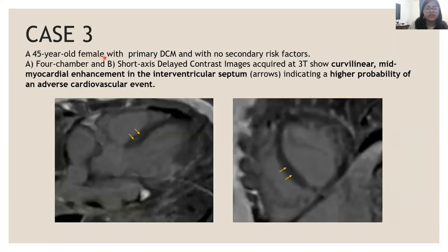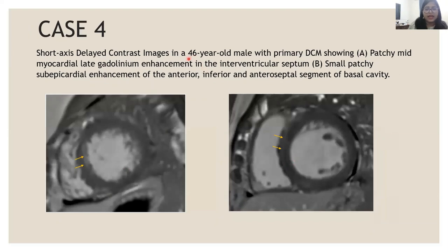A 45-year-old female diagnosed with primary dilated cardiomyopathy and no secondary risk factors — post-contrast images show patchy mid-myocardial enhancement in the interventricular septum. Additionally, a 46-year-old male with primary dilated cardiomyopathy shows patchy mid-myocardial enhancement as well as patchy sub-epicardial enhancement in the interventricular septum.